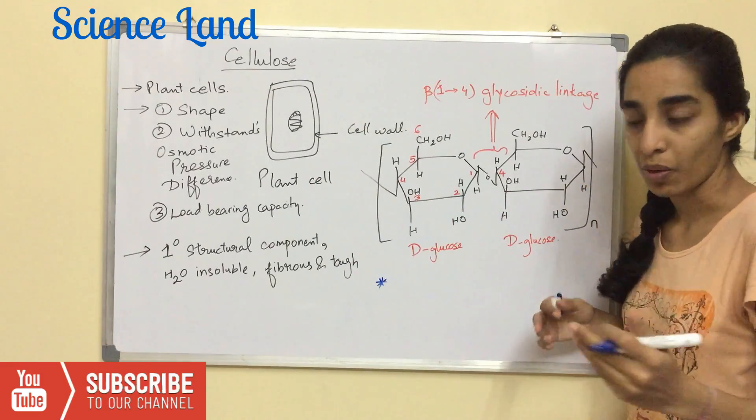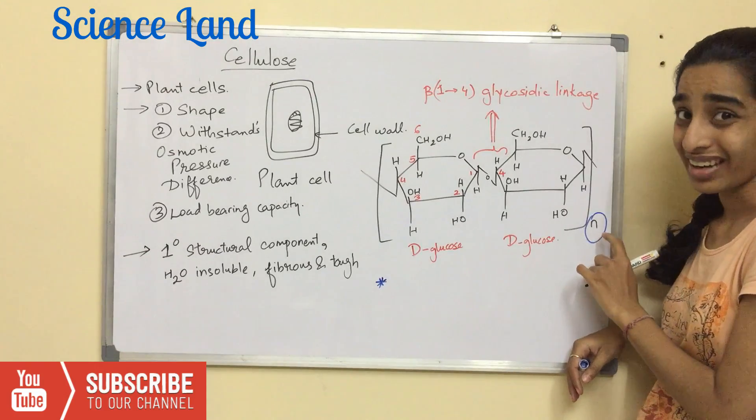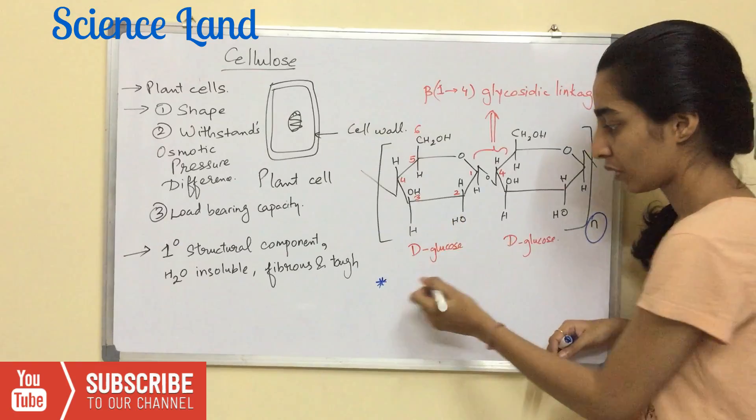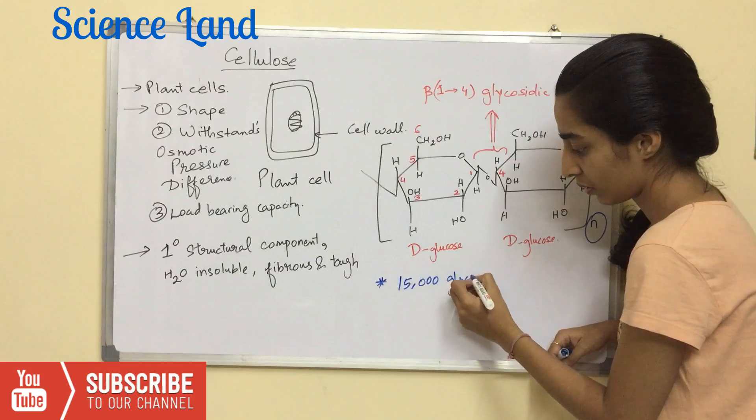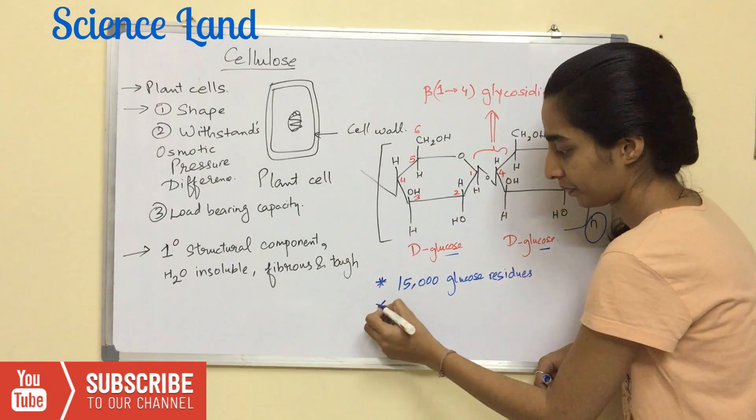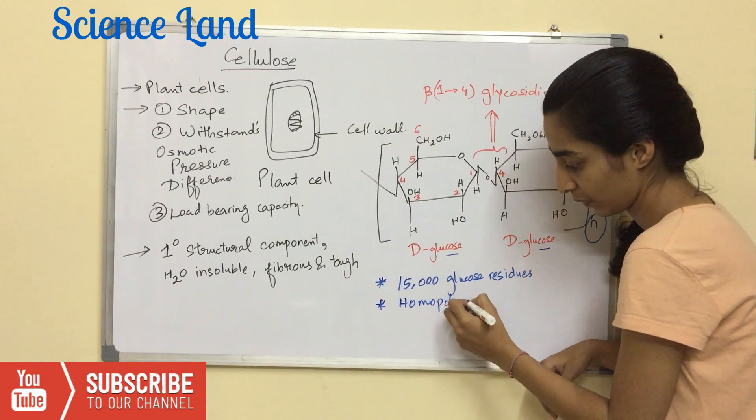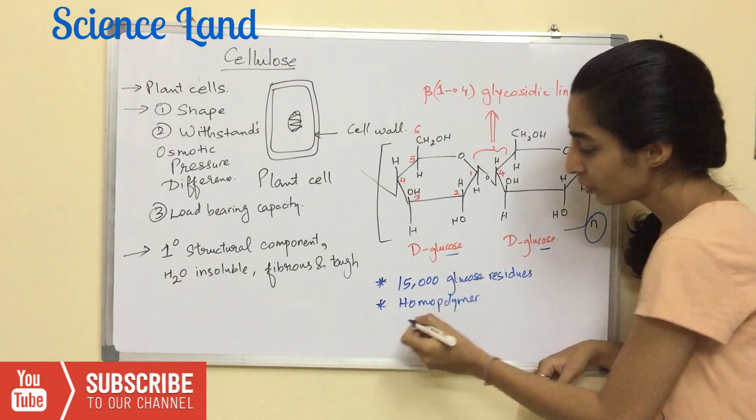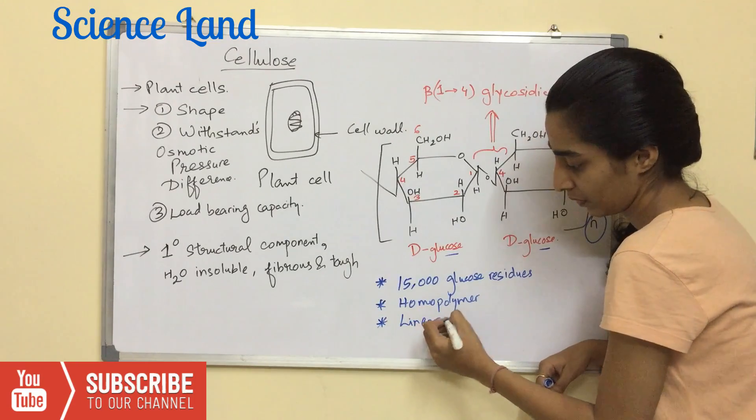So a cellulose is made up of, I've written here N, because I cannot draw that many residues. It is made up of 15,000 glucose residues. It is a homopolymer. It is a linear polymer. There are no branches.